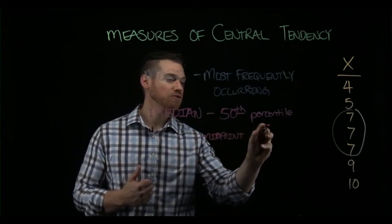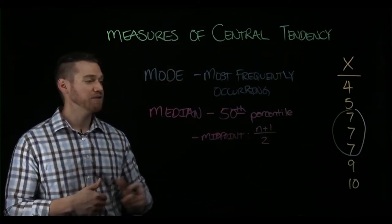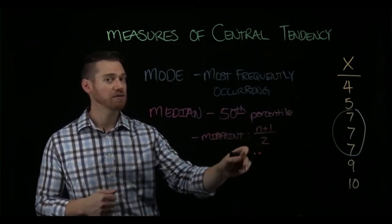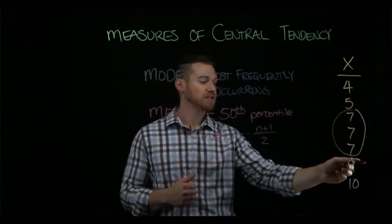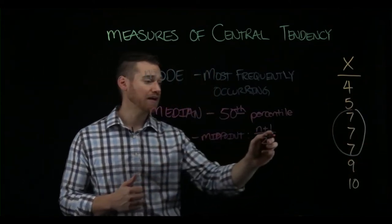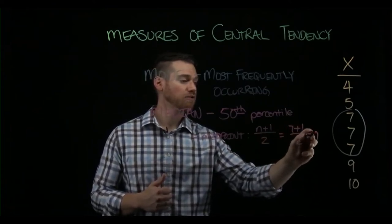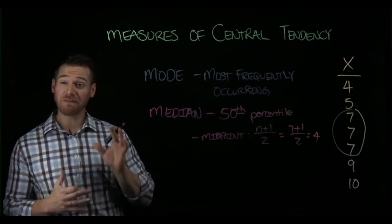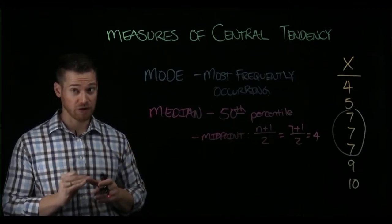The midpoint is found at the location (n+1)/2. What that means is we would take the number of scores, add one, and divide that by two. So here we have one, two, three, four, five, six, seven scores, so we would have (7+1)/2, which equals four.